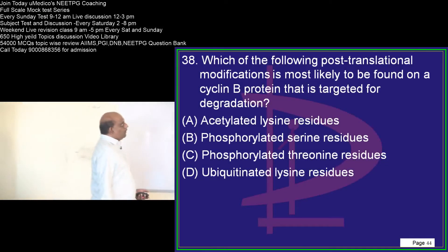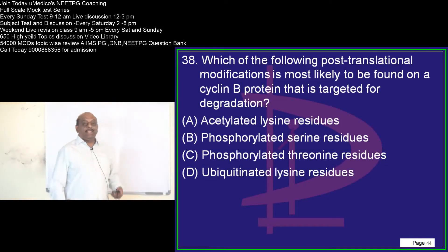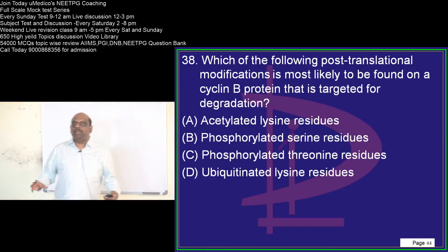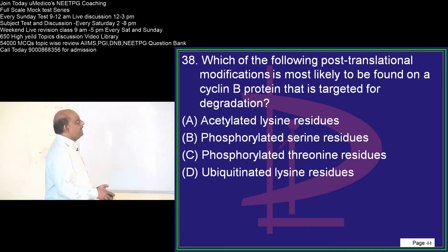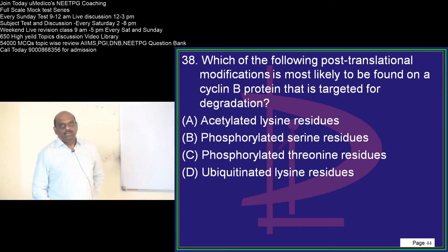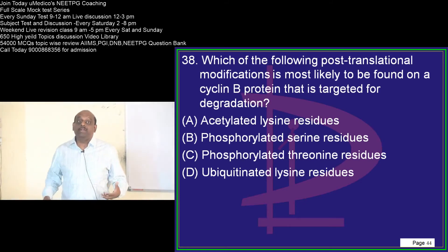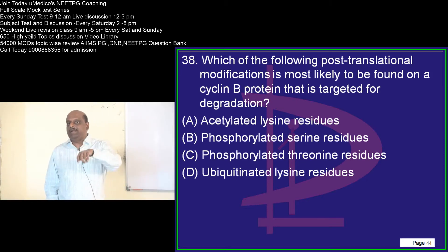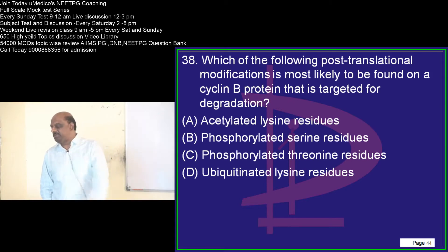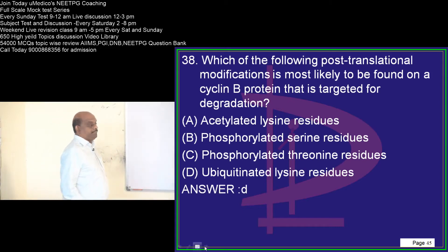Cyclin B protein is being targeted for degradation. How does the body know that this protein is meant for degradation? Is there any way by which a sticker or a label can be attached? This is a very important question.